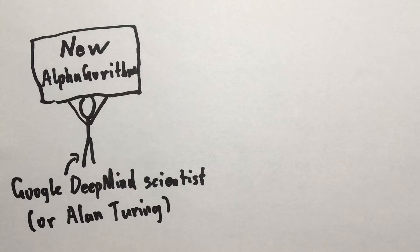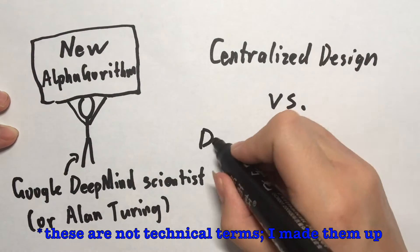Basically, there are two types of algorithms. That is, two methods of getting things done: centralized design and decentralized design.